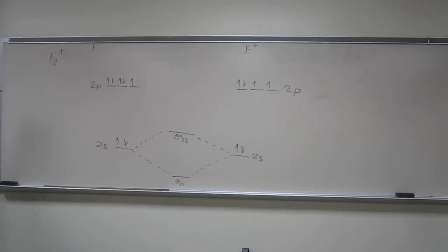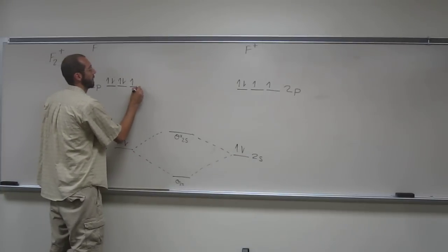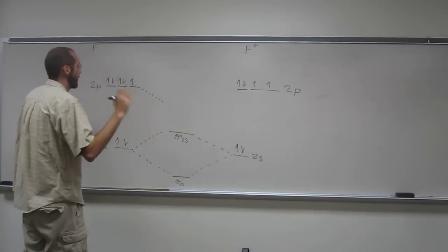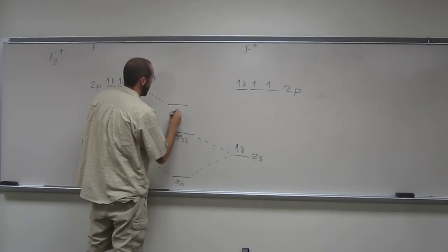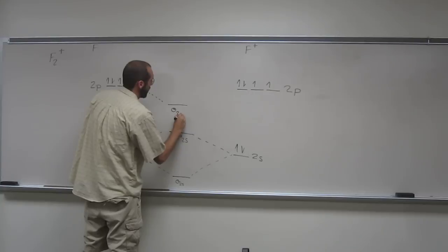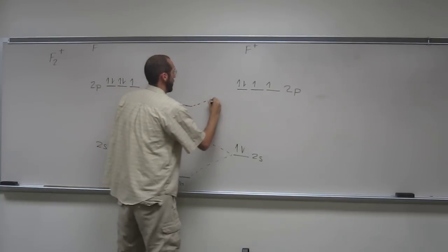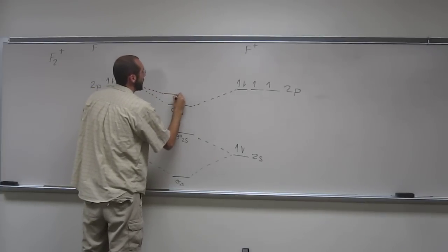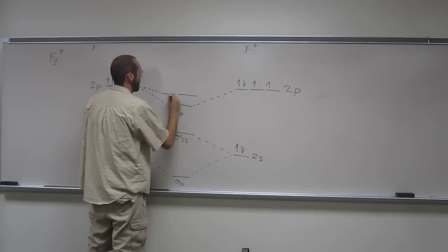And then remember, for these small atoms, the pi and sigma orbitals will repel each other. So we're going to have that normal, what you would think of as the normal electron filling. So the sigma 2p comes before the two pi 2p's.